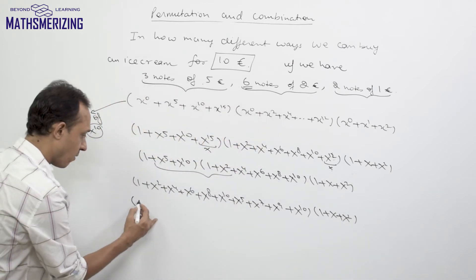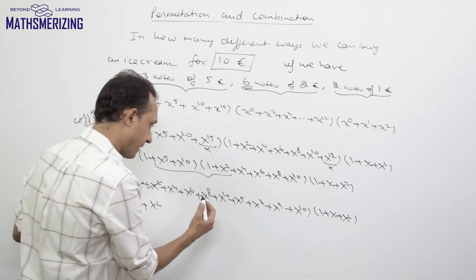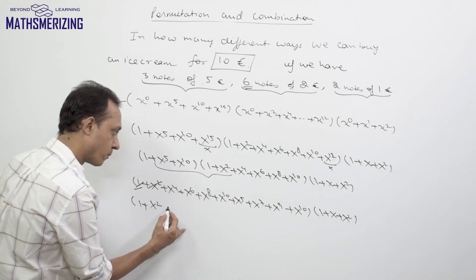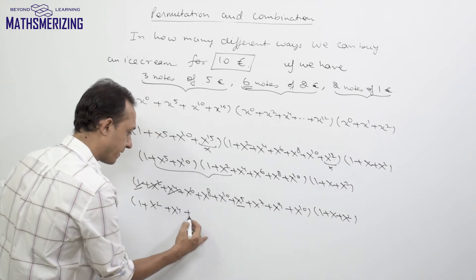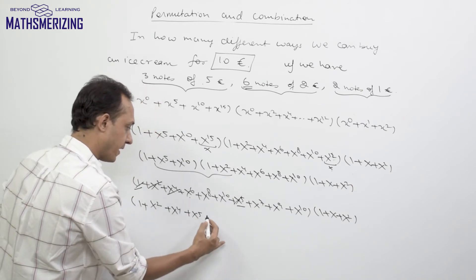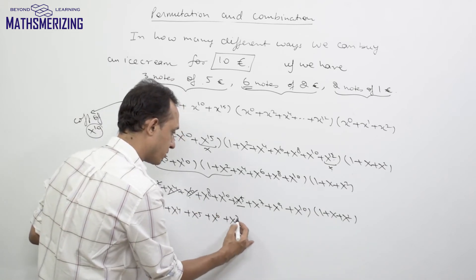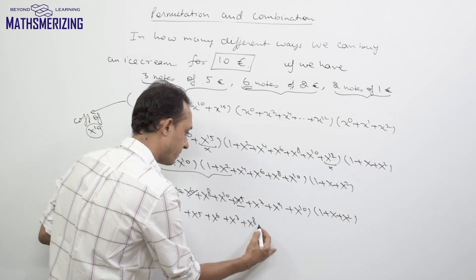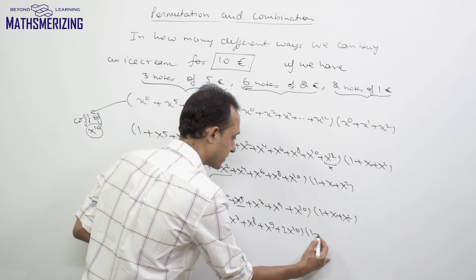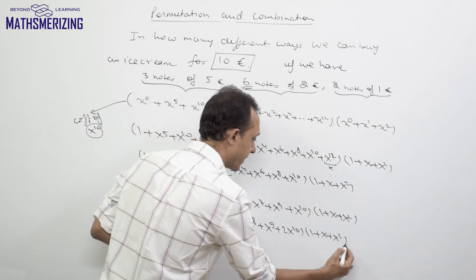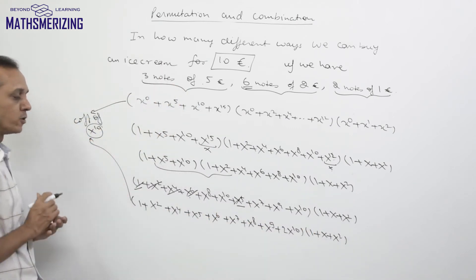Combining these results, I write the product of the first two series as: 1 + x^2 + x^4 + x^5 + x^6 + x^7 + x^8 + x^9 + 2x^10. Now I multiply this combined series by (1 + x + x^2), keeping in mind that I need the coefficient of x^10.